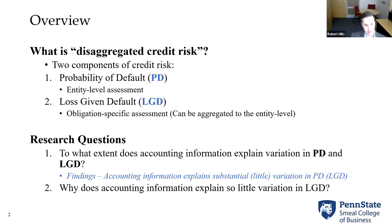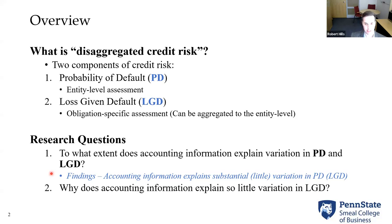So let me get into our research questions. We have two main research questions. The first is: to what extent does accounting information help explain variation in these two disaggregated components of credit risk — PD, probability of default, and LGD, loss given default? Our finding for this first question largely motivates the second: accounting information does a pretty good job explaining variation in probability of default, but doesn't explain much variation in loss given default. Our second research question — which we consider at least as important — is: why does accounting information explain so little variation in loss given default?